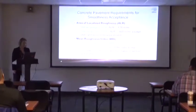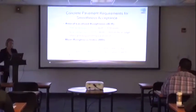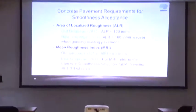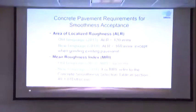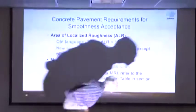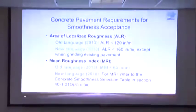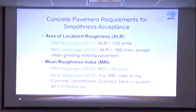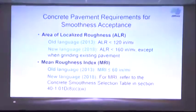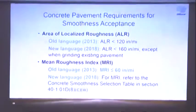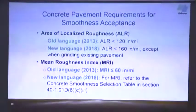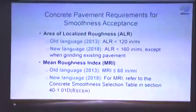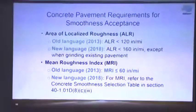For the MRI, the old language required 60 inches per mile, and that covered all situations. With the new language, designers will refer to a concrete smoothness selection table to determine the appropriate MRI.